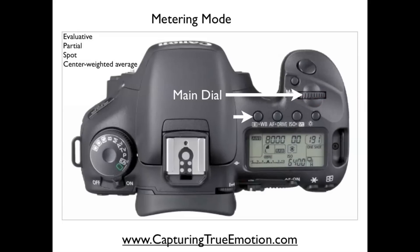To locate and manipulate your metering mode, you would push your metering mode button right here — the picture underneath it looks like an eyeball. Push that button, then turn your main dial to select the metering mode you want. Once you've selected your metering mode, it'll present itself right here in your LCD monitor.